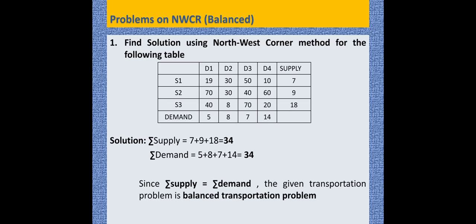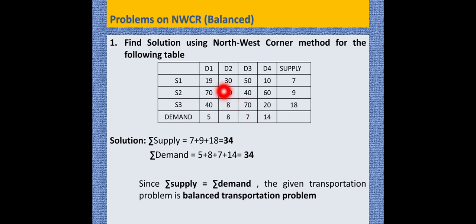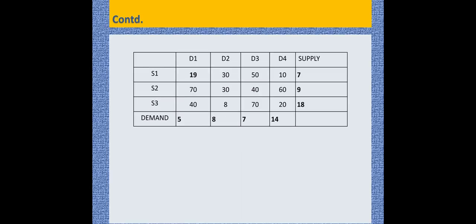Now let us solve a problem on NWCR for a balanced transportation problem. The problem asks us to find a solution using NWCR for the given table, where S1, S2, S3 are supply sources and D1, D2, D3, D4 are demand destinations. The summation of supply is 34 and summation of demand is 34. Since supply equals demand, the given transportation problem is a balanced transportation problem. We now identify the Northwest Corner cell for the first allocation.